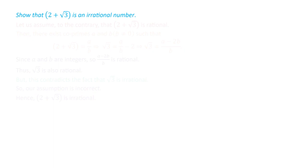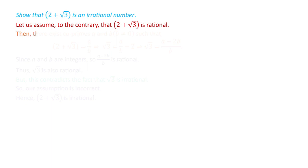Next, show that 2 plus square root 3 is an irrational number. Again we prove this by the method of contradiction. Let us assume that 2 plus square root 3 is a rational number. If it is rational, then there exist co-prime numbers a and b, where b is not equal to 0, such that we can write 2 plus square root 3 equals a by b.